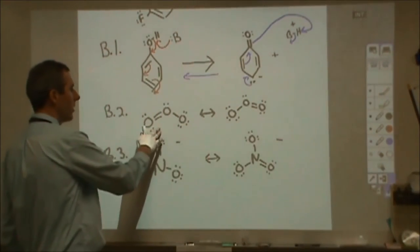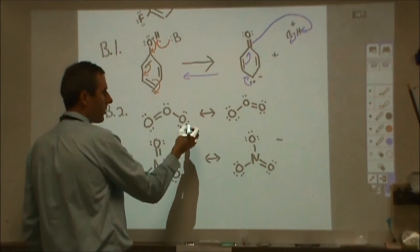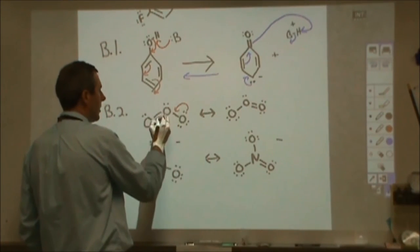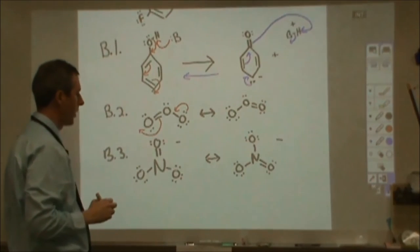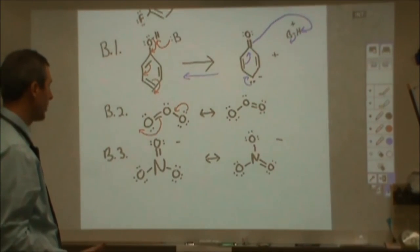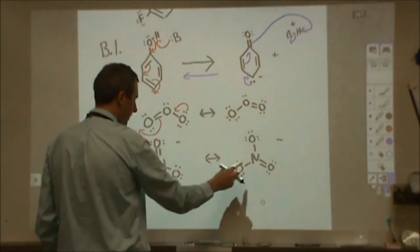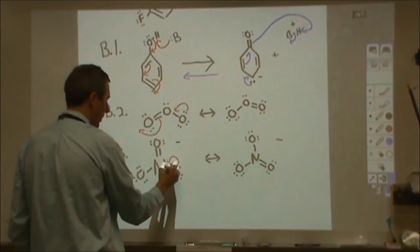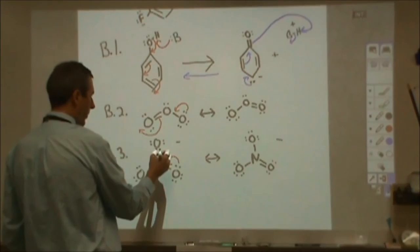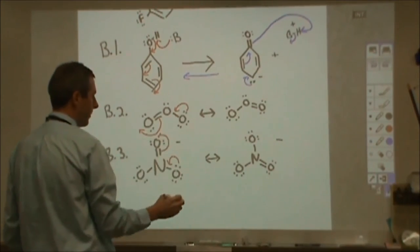For B2, we have ozone resonance. That's real simple. We're going to turn these electrons to here, and these electrons to here. And in B3, we have nitrate resonance, and we can see we're forming a double bond here. And so we would take these two electrons here, and then we would kick out these two electrons to here.